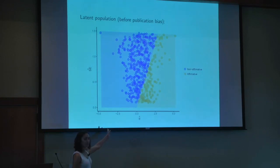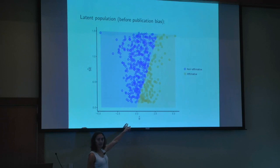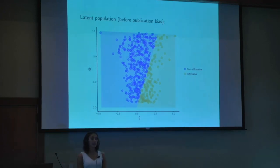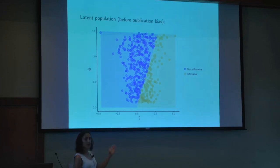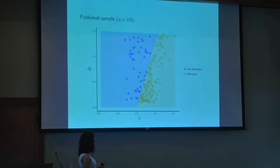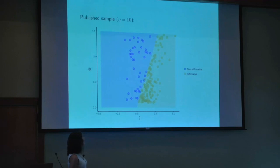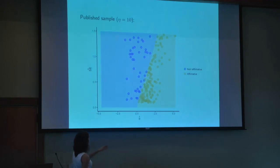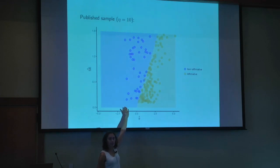Here's a toy funnel plot showing point estimates of simulated studies versus their standard errors, color-coded by whether they're affirmative or not affirmative — this is prior to any publication bias. Now, if I add publication bias — simulating a case with eta equal to 10 — I'm essentially retaining only 10% of the non-affirmative studies while retaining all of the affirmative ones.